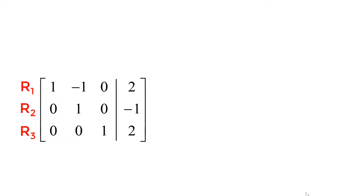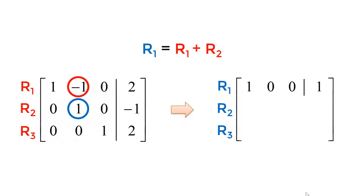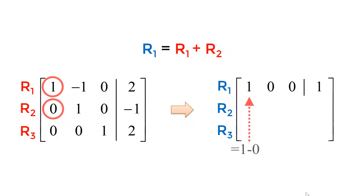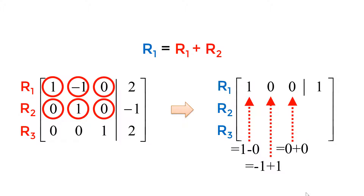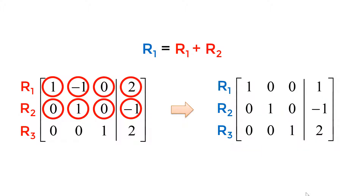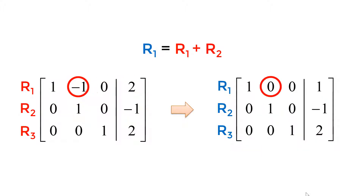Next step is to reduce my minus 1 to 0. I will use 1 in the second row, second column as a pivot point. Since I have minus 1, I will add R2 to R1 element by element. My 1 comes from 1 minus 0, my 0 comes from minus 1 plus 1, my 0 comes from 0 plus 0, and my 1 comes from 2 minus 1. I keep all elements in the last two rows the same. You successfully made 0 in the first row, second column.